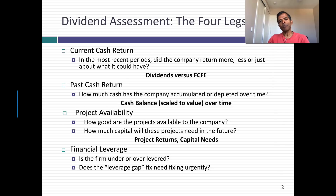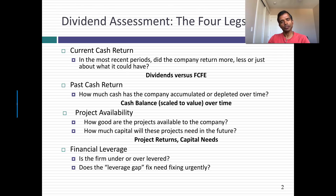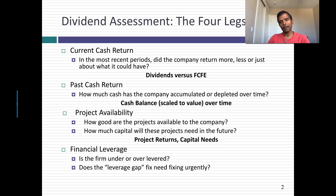Second, remember what happens when companies hold back on free cash flow to equity they don't return to their stockholders — their cash balance builds up. And a company that returns more than it has available draws down its cash balance. So take a look at the cash balance of the company scaled to the value of the company. Is the cash balance 3%, 5%, 10%, or 25% of the company?